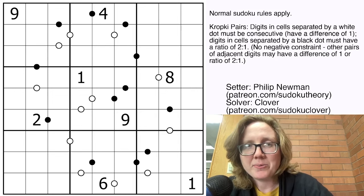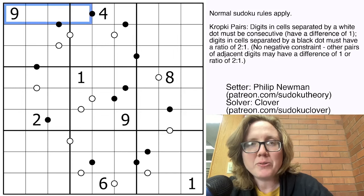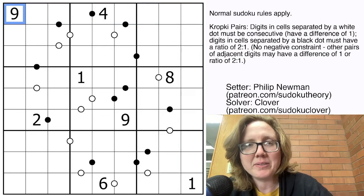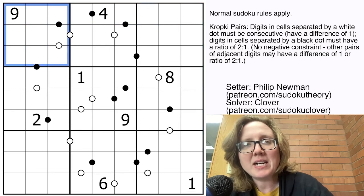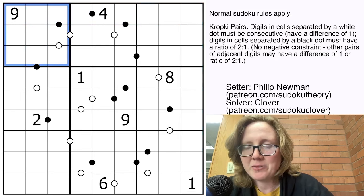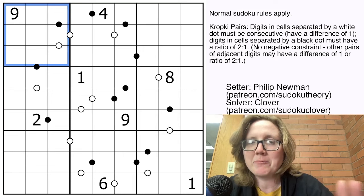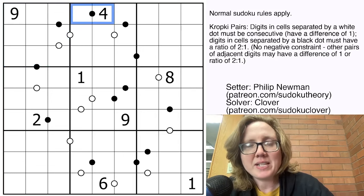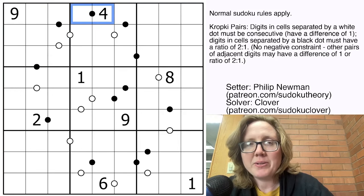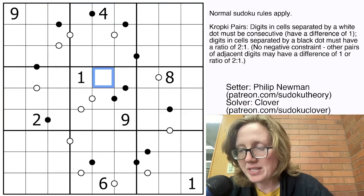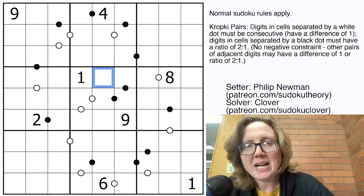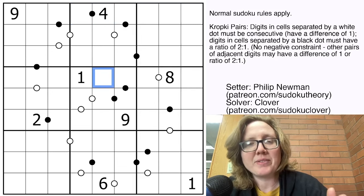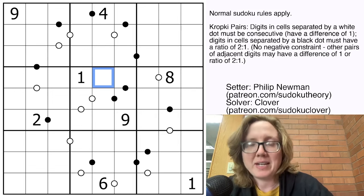So we have normal Sudoku rules, meaning we're placing the digits 1 through 9 once each in each row, each column, and each heavily outlined 3x3 region. And then on top of that we have the Kropke pairs variant. What that means is that we have some black and white dots on the grid. Wherever we have a black dot, the two digits on either side are in a 1 to 2 ratio, in other words one of them is twice as large as the other. And wherever we have a white dot, the two digits on either side are consecutive, in other words one of them is 1 greater than the other, such as 4 and 5.